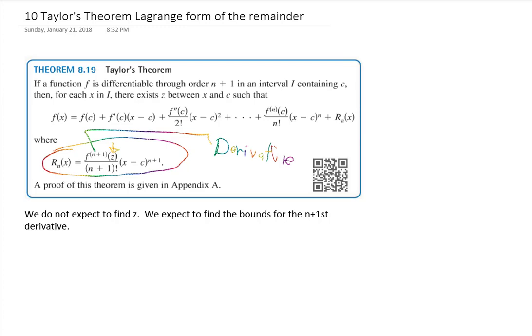The factorial in the denominator gets very large very fast, which means the overall error becomes very small quickly for relatively small values of n. For instance, if n plus 1 is 6, that's 720 in the denominator; if it's 7, it's close to 5,000. So with just a few terms, we get a very small error. Most often we won't know z exactly, so we're looking for boundaries — specifically a maximum or minimum value of the derivative.